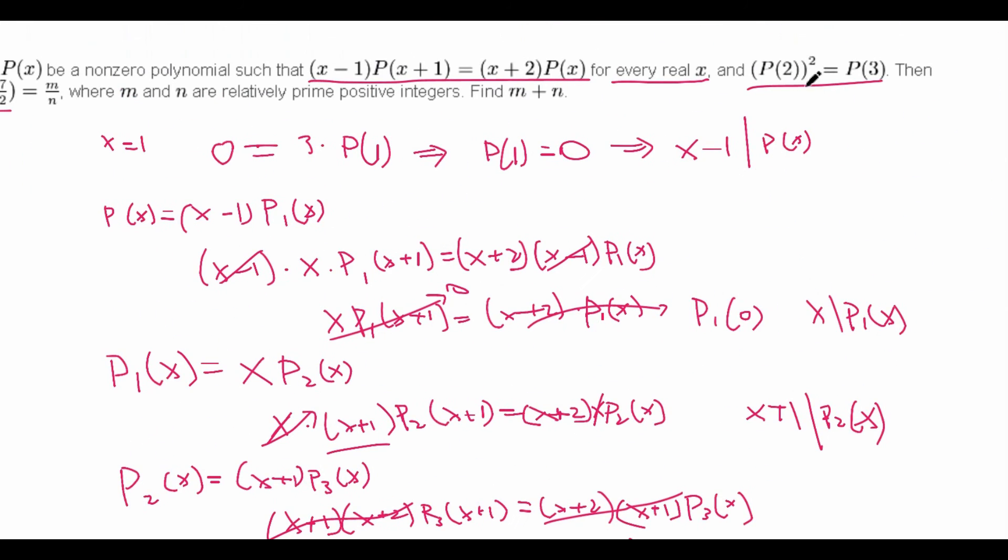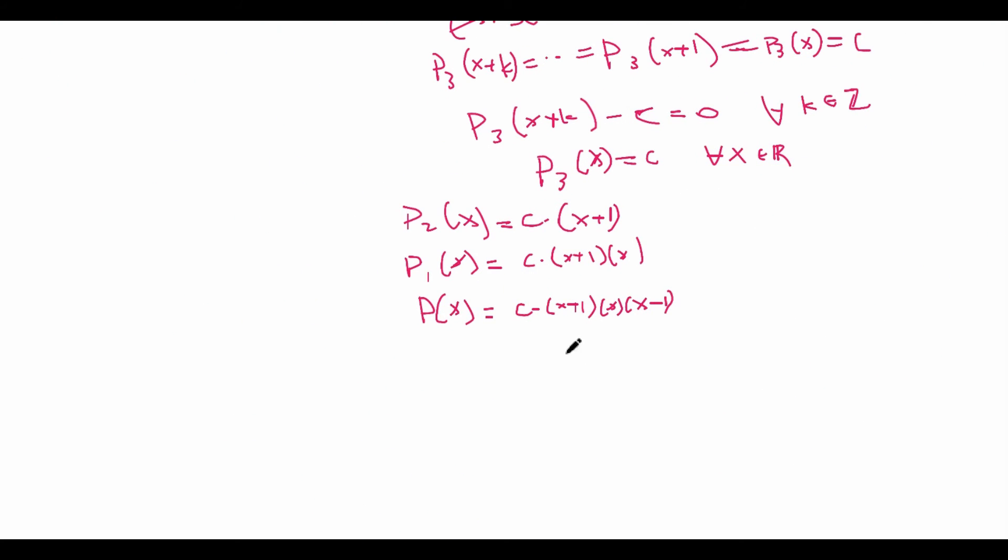So now it's clear that we can use this condition P(2)² = P(3) now. P(2)² is equal to P(3). Well, this tells us that c times (x+1) is 3, x is 2, x-1 is 1 squared, is equal to c times (x+1) is 4 times 3 times 2. Which means that c is equal to 4 times 3 times 2 divided by (3 times 2 times 1)², which is equal to 4 divided by 6.